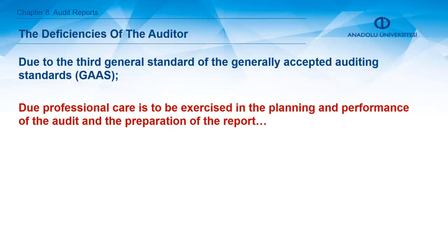Regarding deficiencies of the auditor, the third general standard of generally accepted auditing standards states that due professional care is to be exercised in the planning and performance of the audit and the preparation of the reports. These deficiencies of auditors come from the generally accepted auditing standards. This is the third general standard — due professional care — which shapes the auditors.